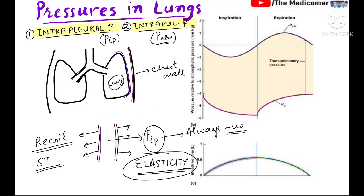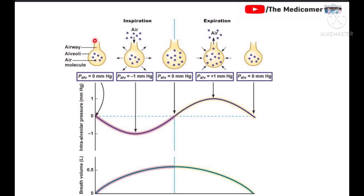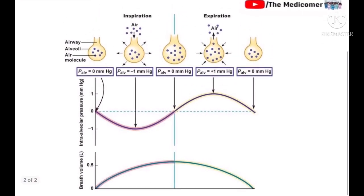Now let's look at the intrapulmonary or intraalveolar pressure. We'll study this with the help of a separate diagram. As you can see, this represents the alveoli with gas molecules present inside. Initially, the intraalveolar pressure equals zero relative to atmospheric pressure, meaning it is actually equal to atmospheric pressure.